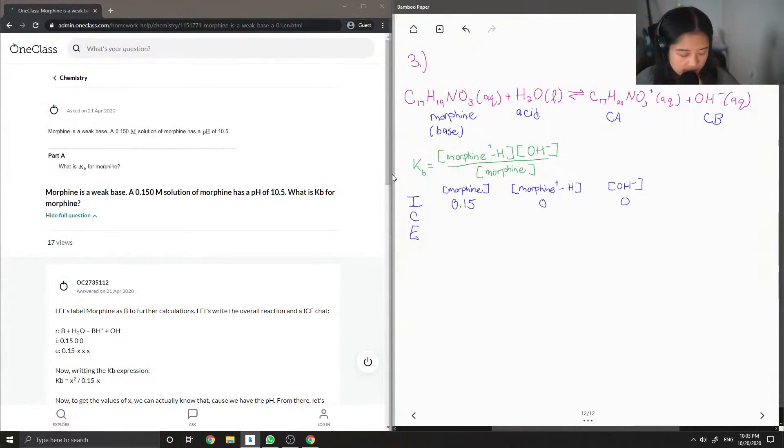So our initial concentration of morphine is 0.15. And then our initial concentrations of our products are 0. Since this is the start of the reaction, they aren't there yet. For the change, it's going to be minus x, and then the change for the products is plus x. And then lastly here, the equilibrium.